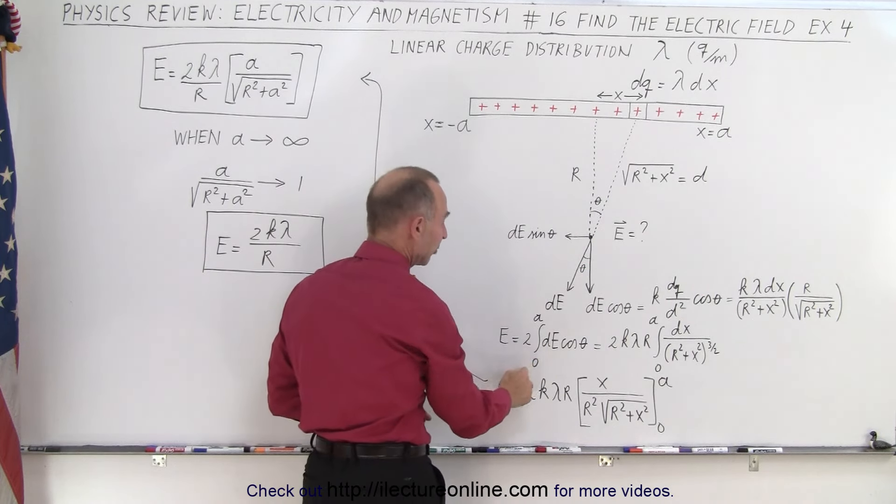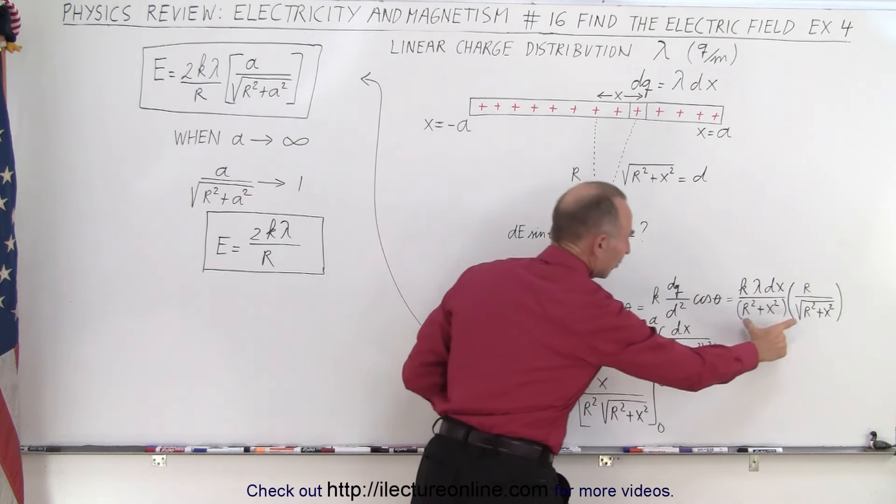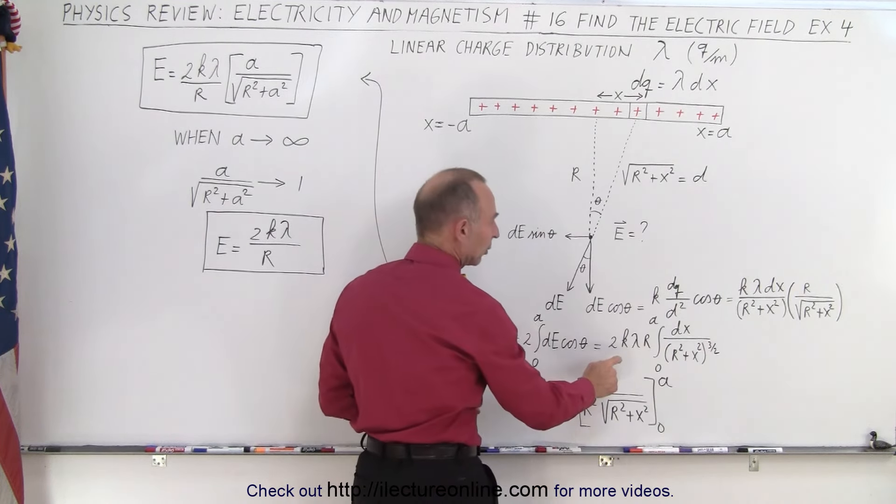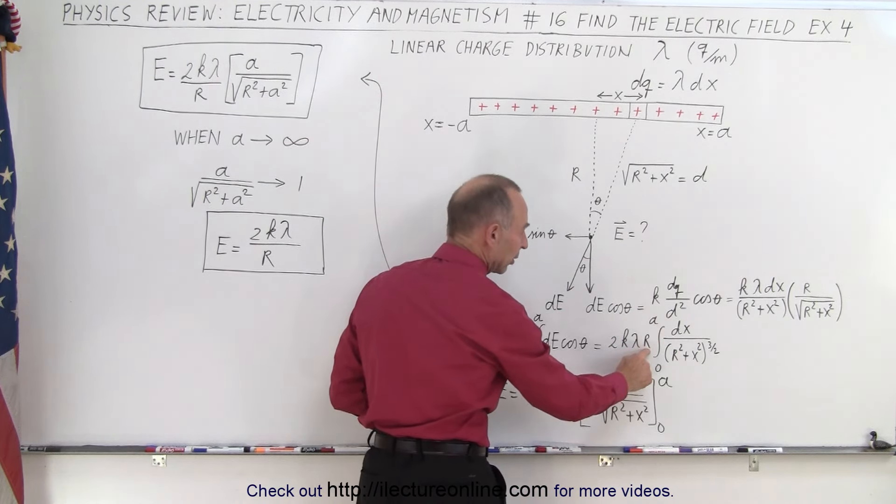So it's twice integrated from zero to a times dE cosine theta, which is defined right here. Now notice that the two is a constant, k is a constant, λ the linear charge density is constant, and r is a constant, that's the distance away from the charge distribution.